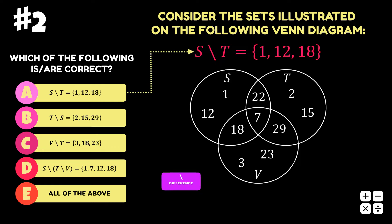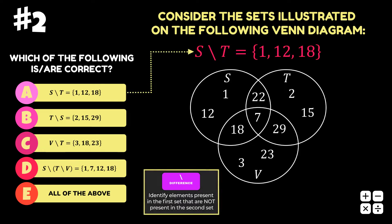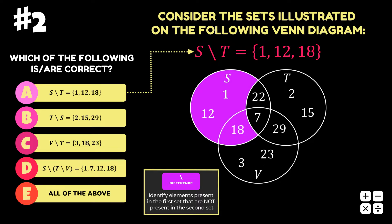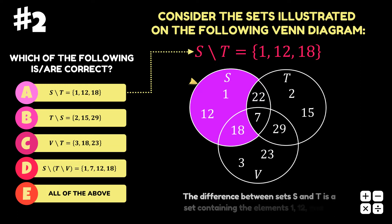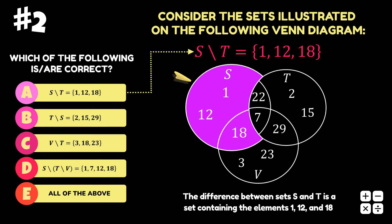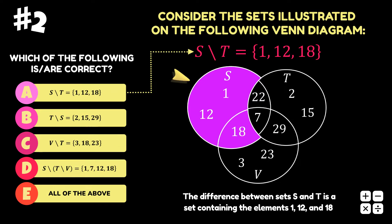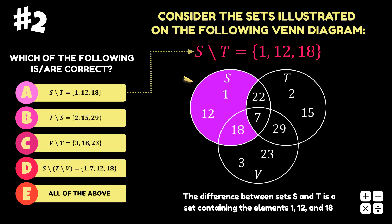Option A is the difference between sets S and T. Looking at the Venn diagram, the difference between sets S and T is the area occupied by set S that is not occupied by set T. Hence, the elements in set S that are not in set T are 1, 12, and 18. Therefore, option A is correct.